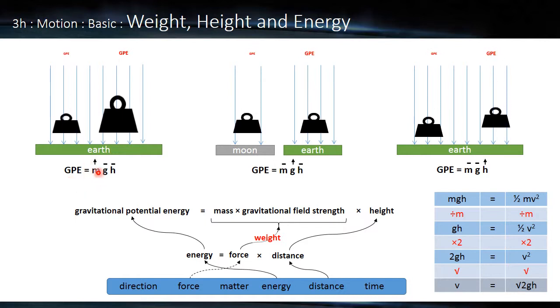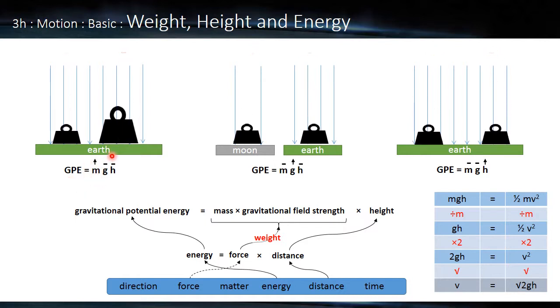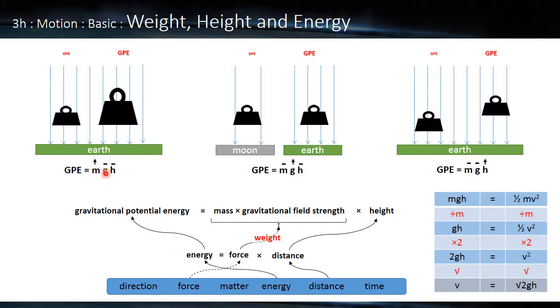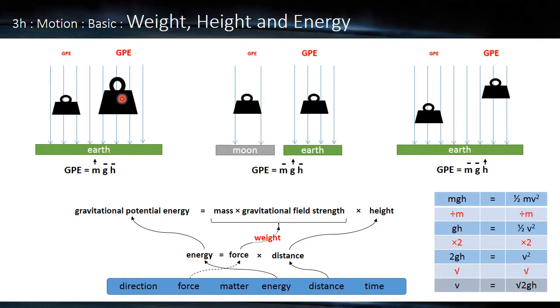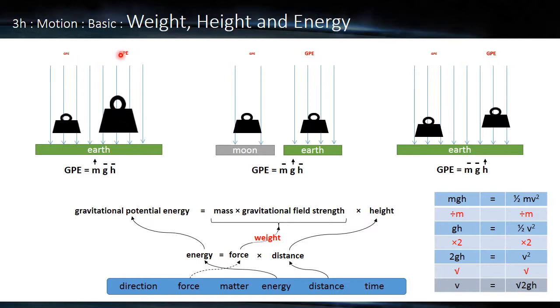So if we increase the mass fairly straightforwardly, if we keep everything else the same, and that's what this little bar means, stays the same. So same gravitational strength, same height, we're going to get more energy for the more massive object. So we can see a much bigger one here.